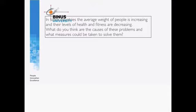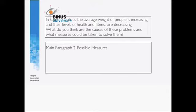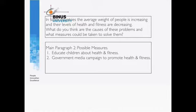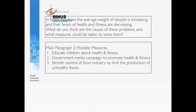In some countries, the average weight of people is increasing and their levels of health and fitness are decreasing. What measures could be taken to solve them? Let's imagine that main paragraph 2 answers this part. You've got number 1: educate children about health and fitness. Number 2: government media campaign to promote health and fitness. And number 3: stricter control of food industry to limit the production of unhealthy foods. That is main paragraph 2.